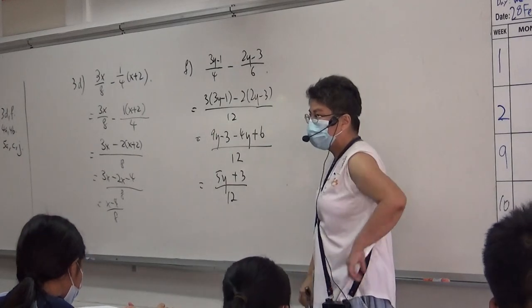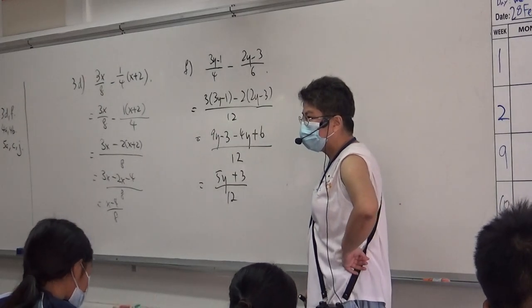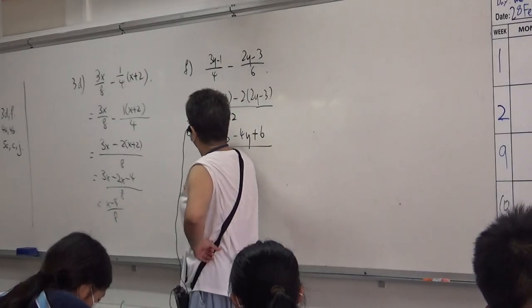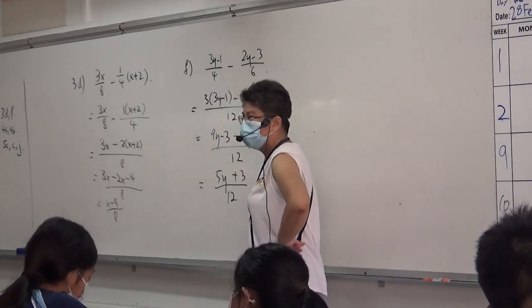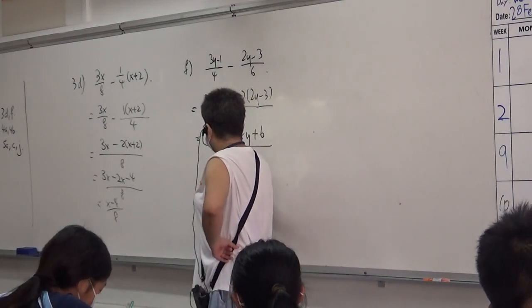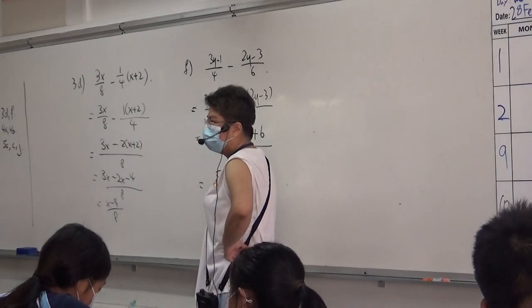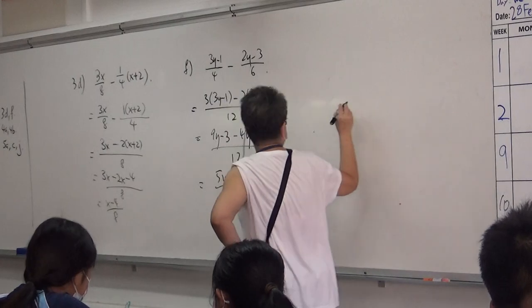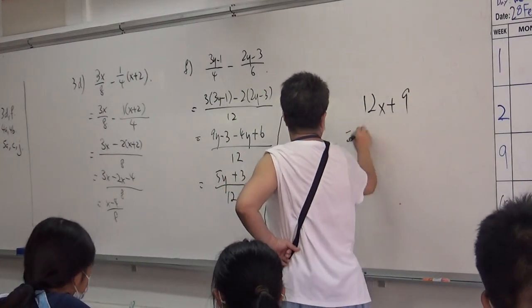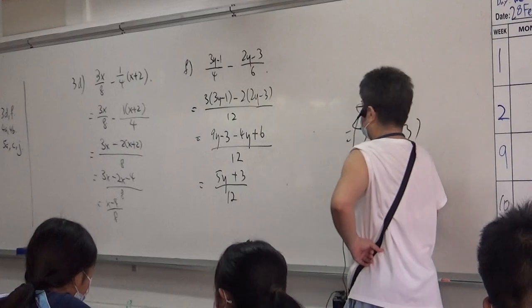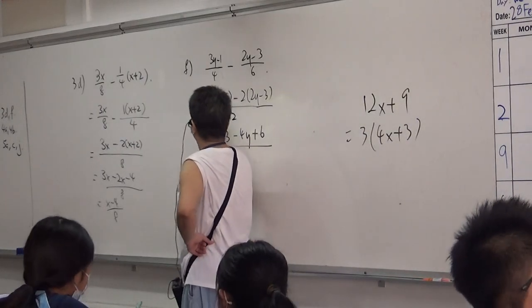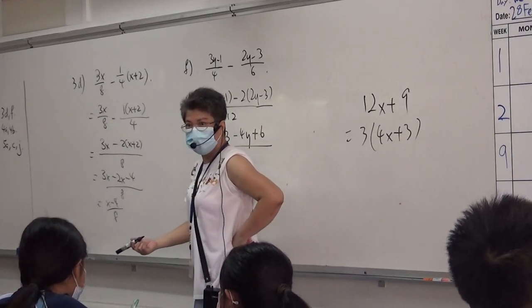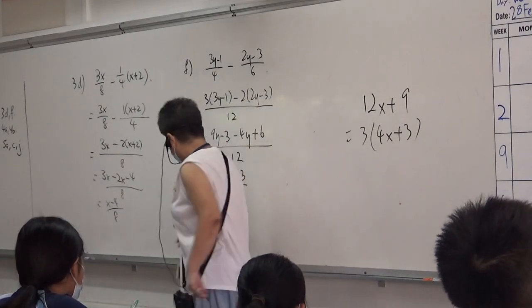5Y plus 3 over 10, right? 12. 10 times 3, 11 times 5. 22, 21. Please, if I write this down, I'm going to factorize it. Alright now, I never factorize one, right? Okay, alright.